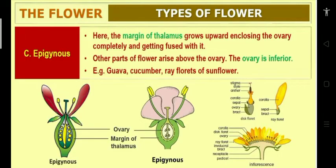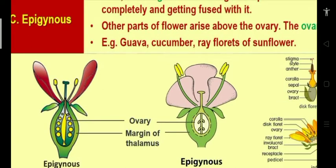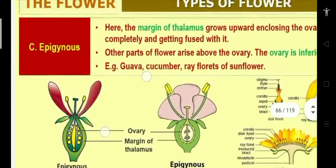Epigynous flower: gynecium is totally present inside, with the ovary enclosed by the thalamus and fused with it. Other floral parts are present above the ovary, making it an inferior ovary. Examples: kova, cucumber, ray florets of sunflower. As seen in the diagram, the gynecium is totally enclosed by the thalamus — that is the epigynous flower.